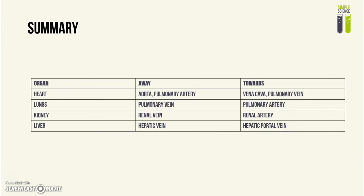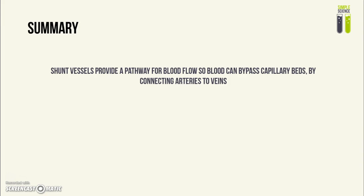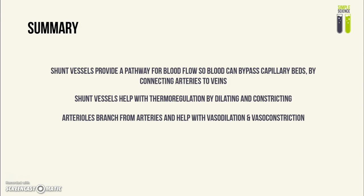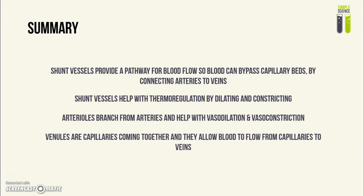The hepatic artery also exists but is not required. To summarize the remaining vessels: shunt vessels connect an artery to a vein to provide an alternative pathway for blood so it can bypass a capillary bed, giving them a role in thermoregulation through dilation and constriction. Arterioles branch from larger arteries and assist with vasodilation and vasoconstriction due to muscle relaxation and contraction. Venules are formed by capillaries coming together and allow blood to flow from capillaries into the veins.